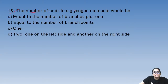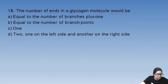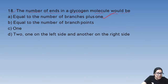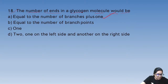The number of ends in a glycogen molecule would be equal to the number of branches plus one. This was a very good question — if you got it wrong, note it down carefully. The answer for question 18 is A.